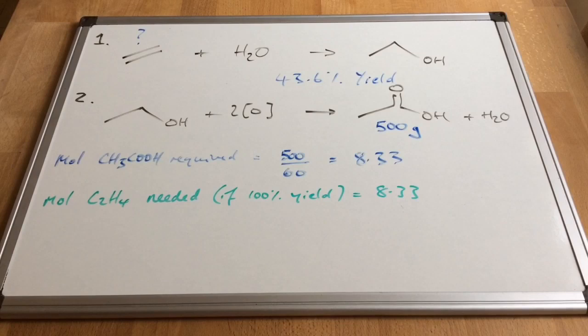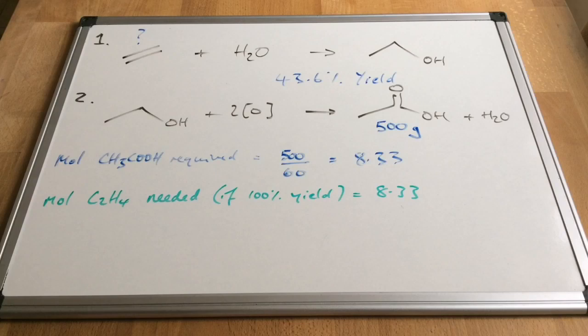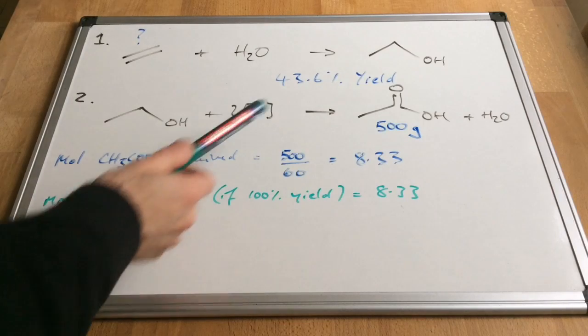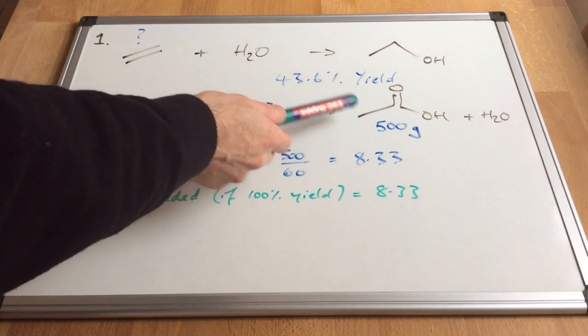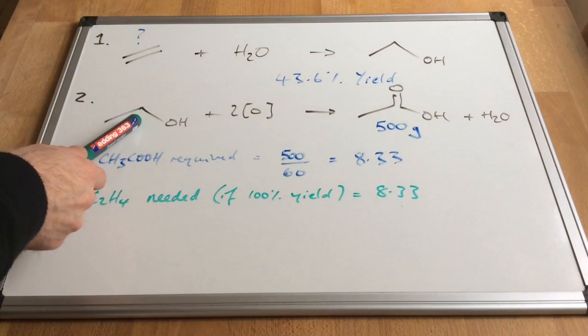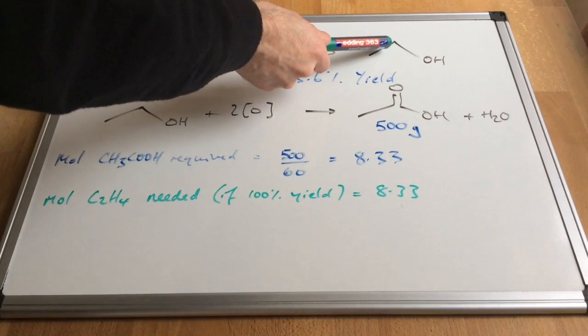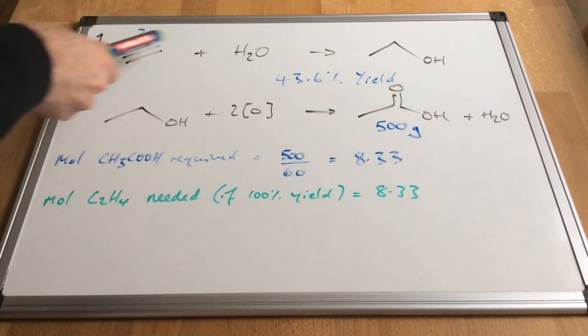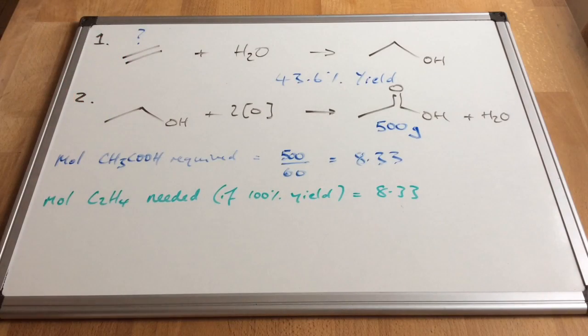The moles of ethene we would need, assuming it was 100% yield, would be the same. And that's because there's a one-to-one ratio running right through this synthetic route. So we know that we need to make 8.33 moles of carboxylic acid. So we would need to use 8.33 moles of alcohol. That's created in step one. And so you can see from the mole ratio, it all goes back to an identical number of moles of ethene at the very start.